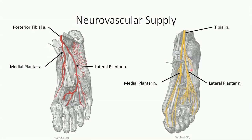The lateral plantar nerve passes deep to abductor hallucis running into the lateral compartment of the foot. The deep branch supplies all the muscles not innervated by the medial plantar nerve, while the superficial band supplies the skin over the lateral one and a half digits — greater muscle innervation, less cutaneous distribution. The medial plantar artery is the smaller of the two terminal branches off the posterior tibial artery, supplying the muscles of the great toe with a similar cutaneous pattern to the medial plantar nerve. The lateral plantar artery is the larger of the two, traveling with the lateral plantar nerve and curving medially to form the largest component of the deep plantar arch.